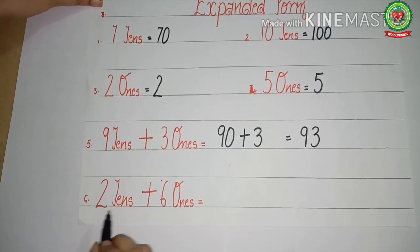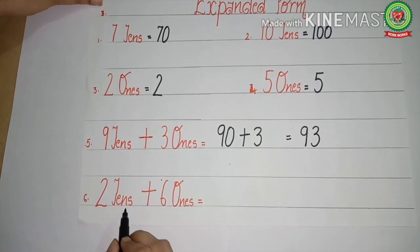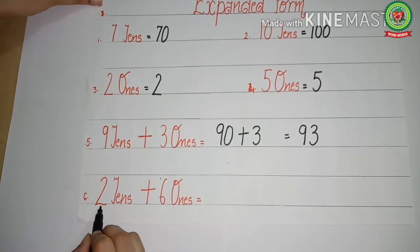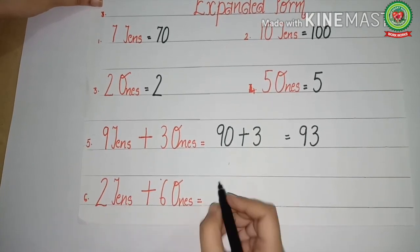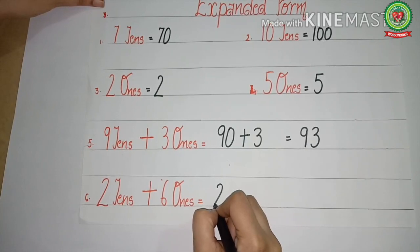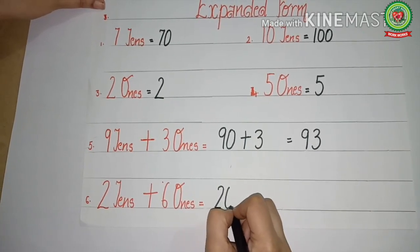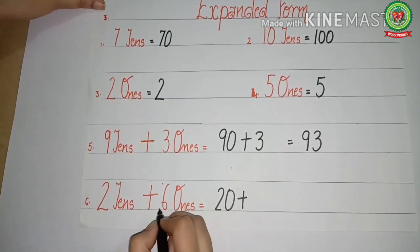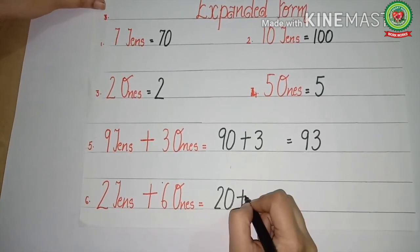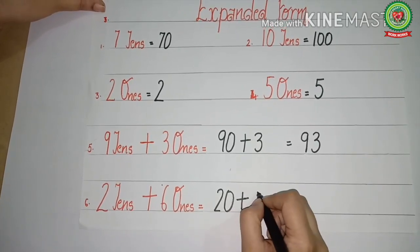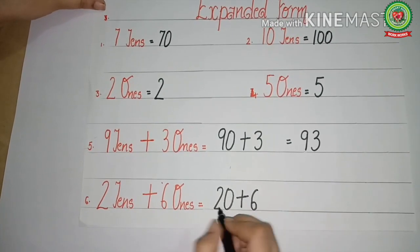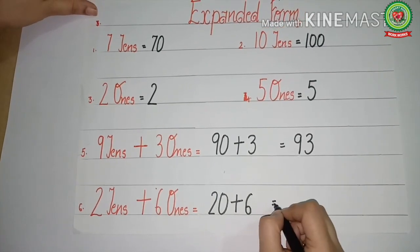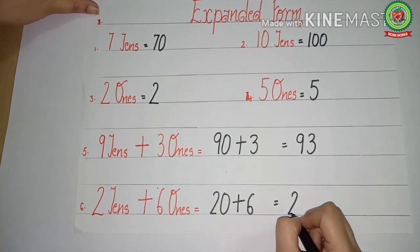Two tens plus six ones. Two tens means twenty, plus six ones means six. Twenty plus six equals twenty-six.